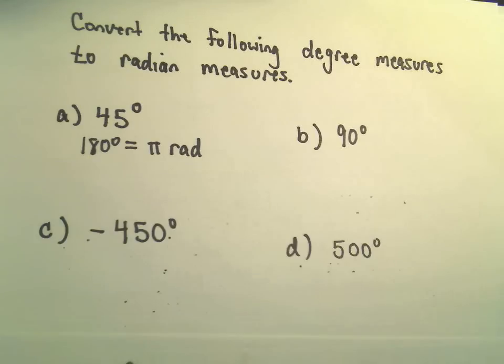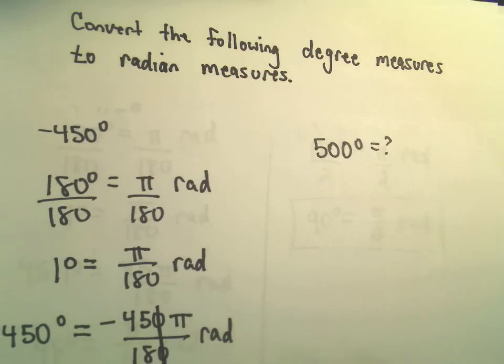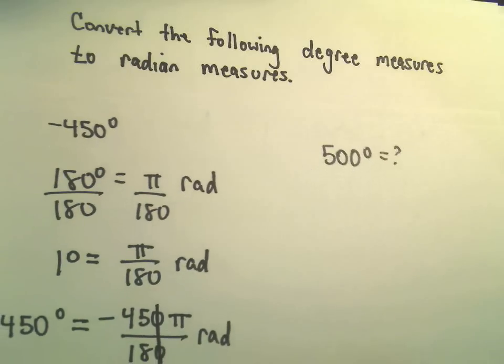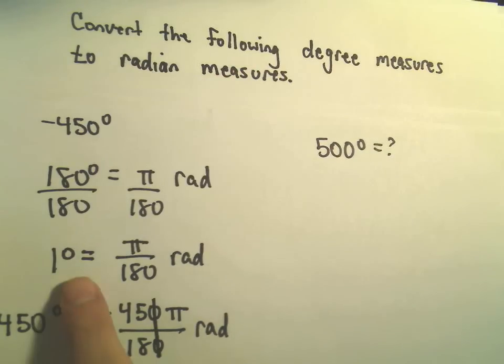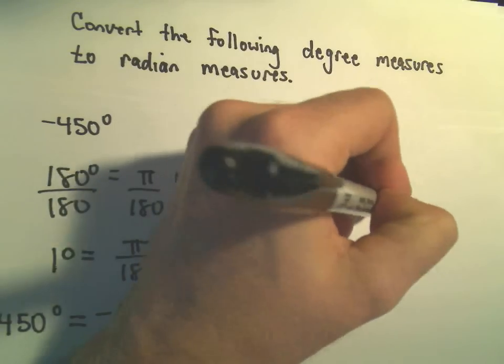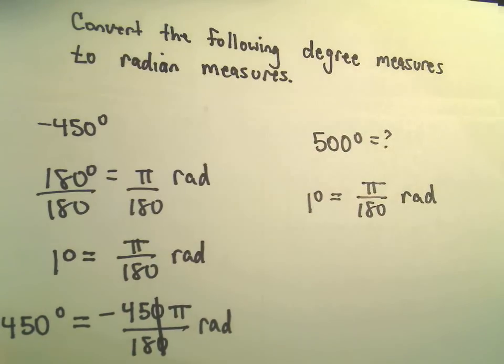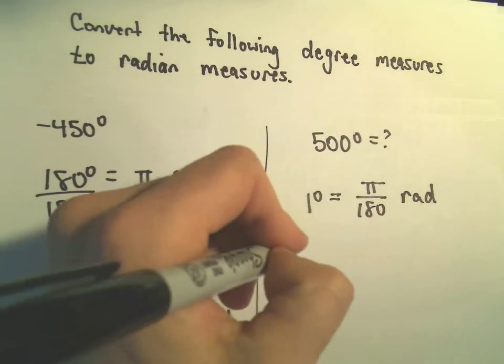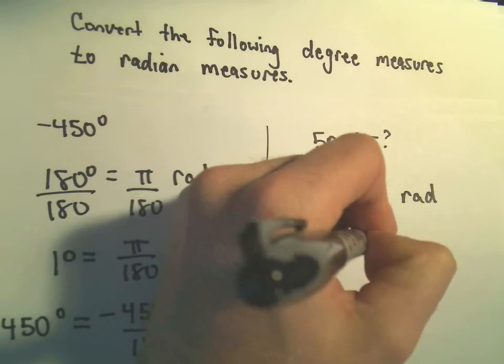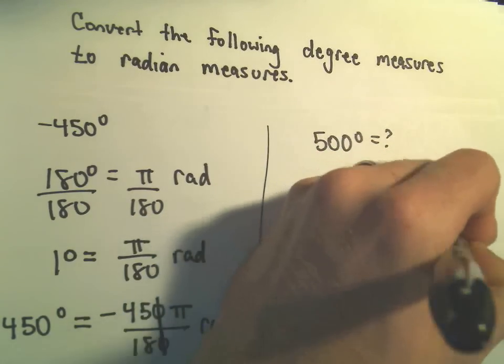Last but not least, I think we have 500 degrees. So to do this one, we'll just do the exact same thing. So I'm just going to jump ahead. So we'll have 1 degree is equal to pi over 180 radians. And now I'm simply going to multiply, in this case, I'm going to multiply both sides by 500. So I'll get 500 degrees is 500 pi over 180 radians.